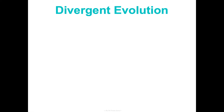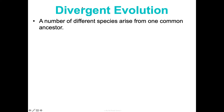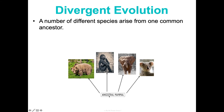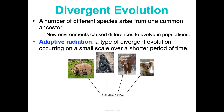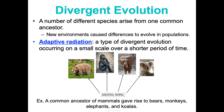The next three are my favorites — they're really important and will come up a lot. Divergent evolution is when a number of different species arise from one common ancestor. For example, bears, gorillas, elephants, and koala bears all diverged from some ancestral mammal species. These species lived in new environments, which caused them to evolve to survive there, until they became so different they were new species. A type of divergent evolution is adaptive radiation — divergent evolution on a really small scale over a short period of time.